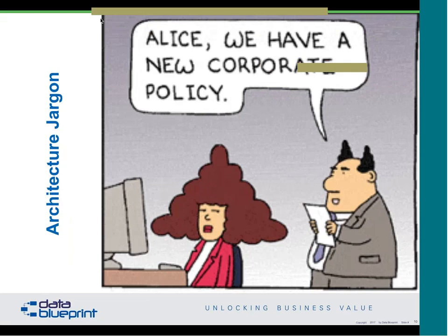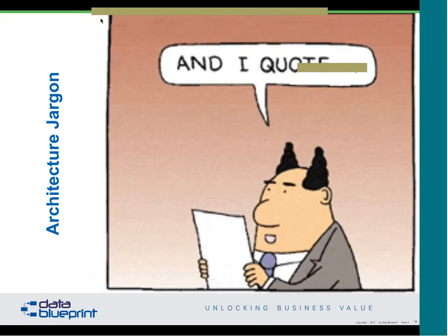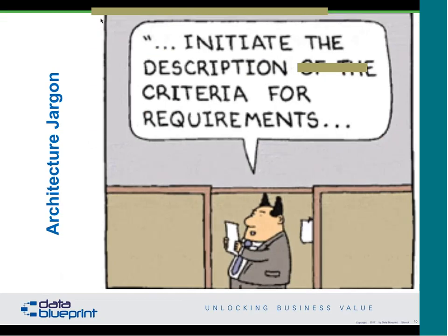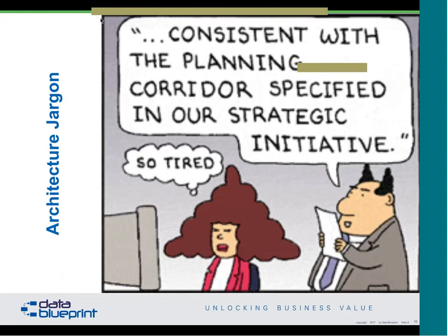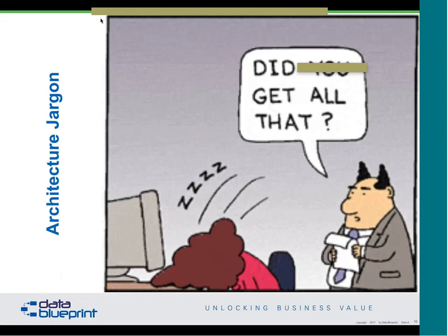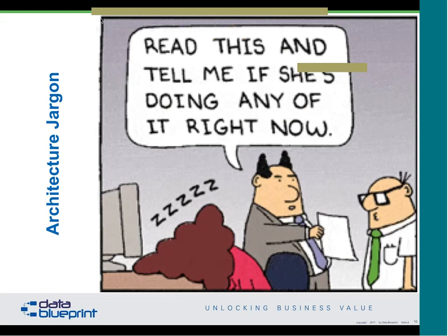I like to start with a particular bit — just to let folks know that even though Scott does a phenomenal job pulling this together, this is actually a very old one. It says: 'Alice, we have a new corporate policy,' says the PHB — the pointy-haired boss — 'initiate the description of the criteria for requirements by developing a framework for the application architecture consistent with the planning corridor specified in our strategic initiative.' Did you get all that? People just don't understand what architecture does.